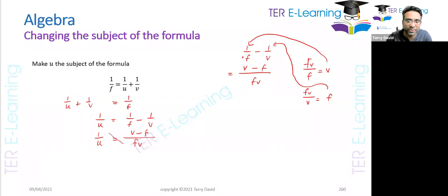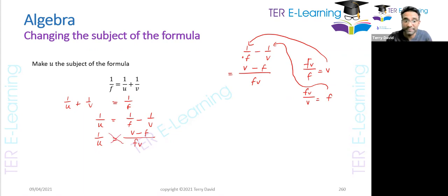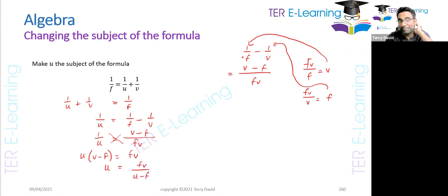Now we have 1 over u is equal to (v minus f) over fv. Since we have a fraction equal to another fraction, we cross multiply. We want u on the left hand side, so: u(v minus f) equals fv, therefore u is equal to fv over (v minus f).